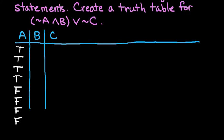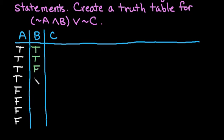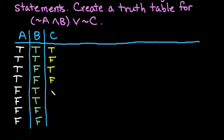There are eight different combinations that can happen because I've got two choices for the first one, times two choices for the second one, which is four, times two choices for the third one, which is a total of eight different combinations. The second column always follows the pattern true-true, false-false, true-true, false-false. And then the third column follows repeating true-false, true-false, true-false, true-false.